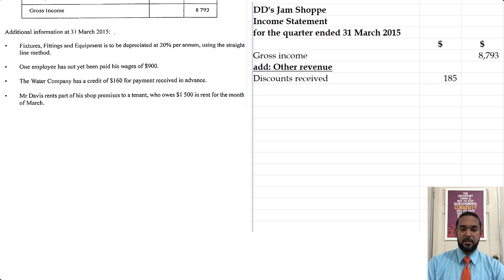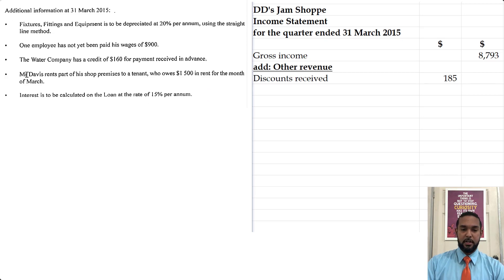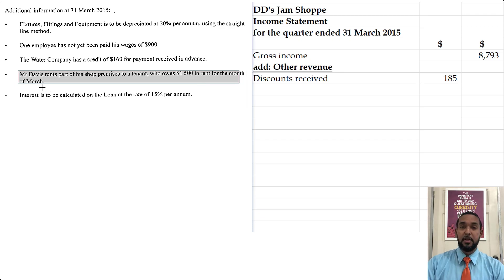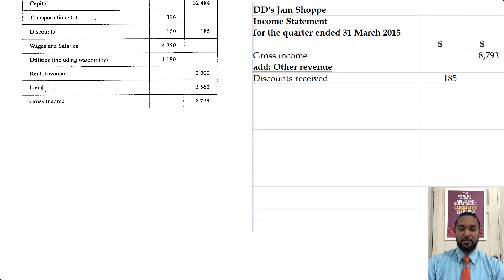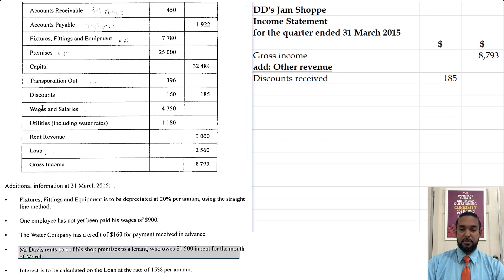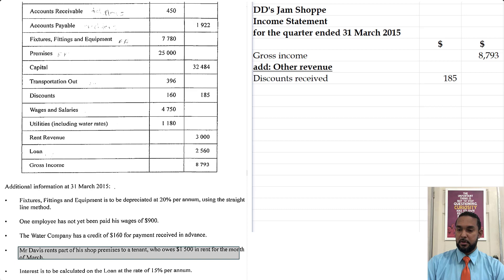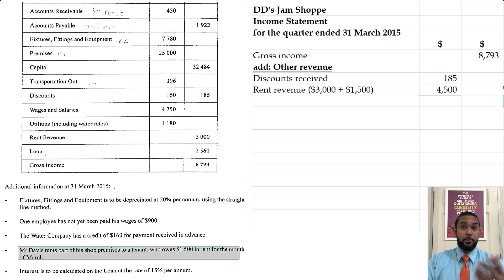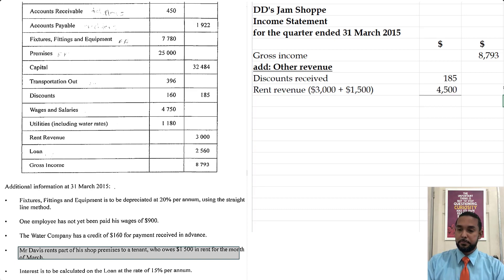Now let's talk about the rent. The rent revenue here is 3000 — that's how much we've received — but if we look at the additional information, it says Mr. Davis rents out part of his shop and is owed 1500 in rent. That means we have to add that 1500 to the 3000 already received. It's an accrued portion, and with accruals we add the accrued amount.